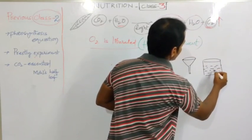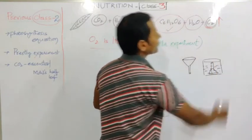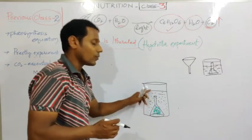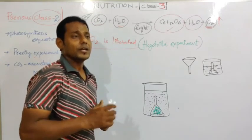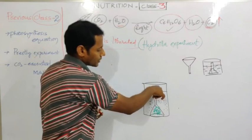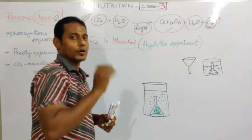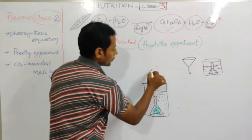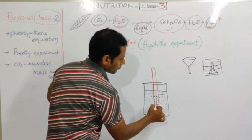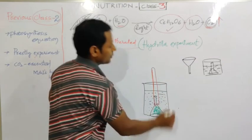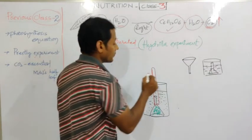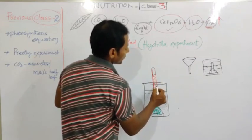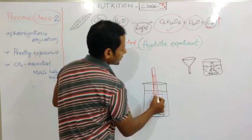The stem of the funnel must be kept below the water level. Then on top of the funnel stem, we insert a test tube in reverse order - inverted on the stem of the funnel. The test tube is inserted in reverse order on the stem. With the help of your thumb, you fill the test tube with water, invert it, and place it on the funnel stem.